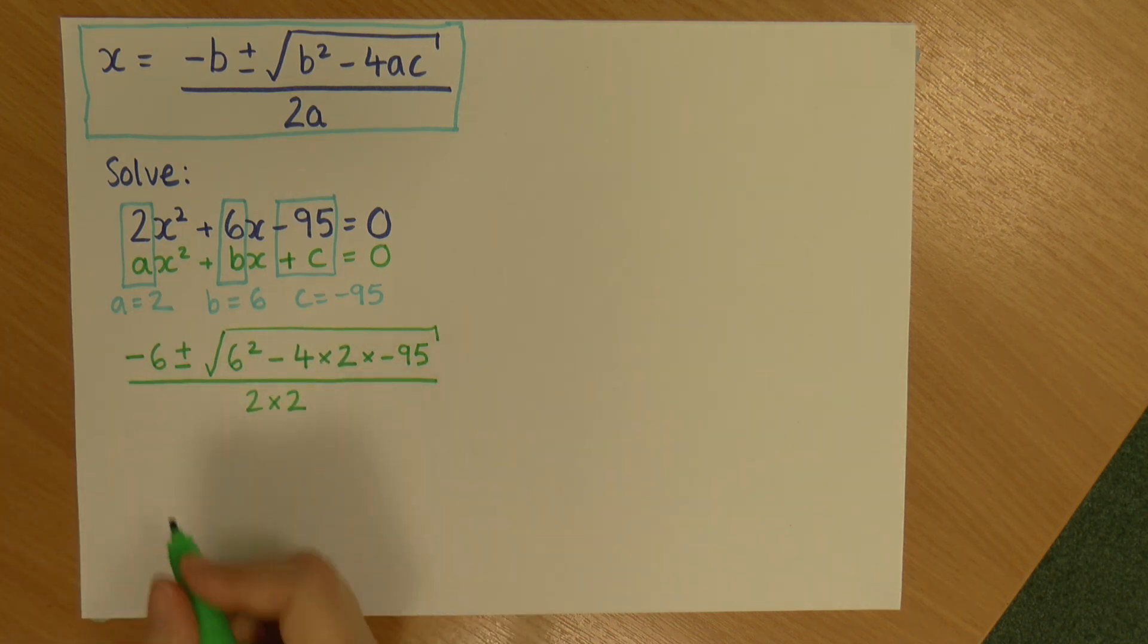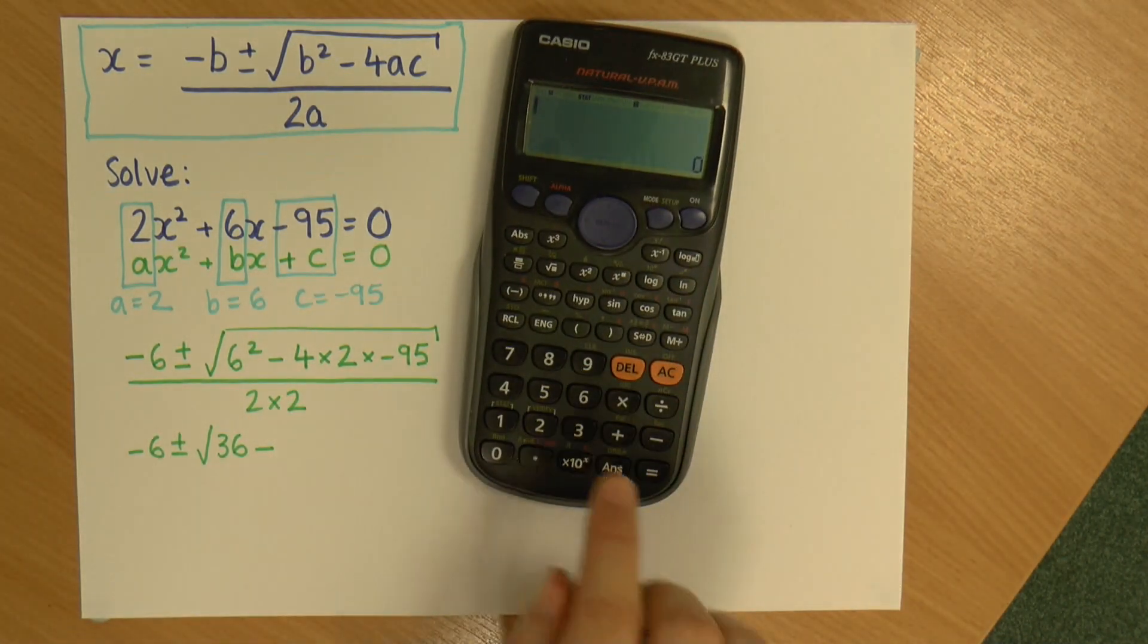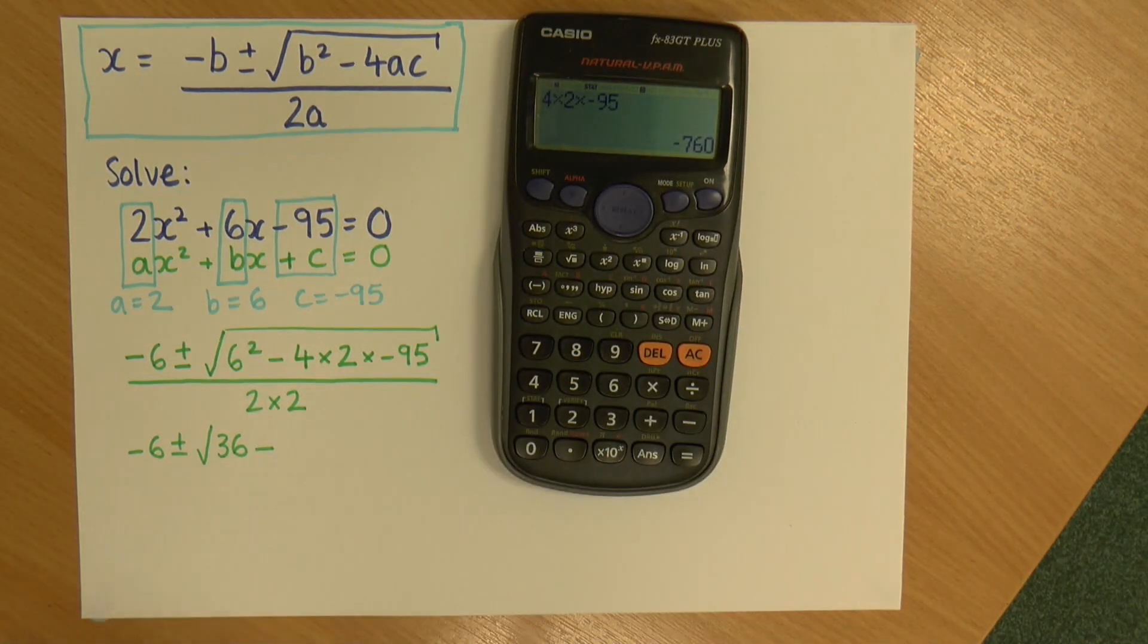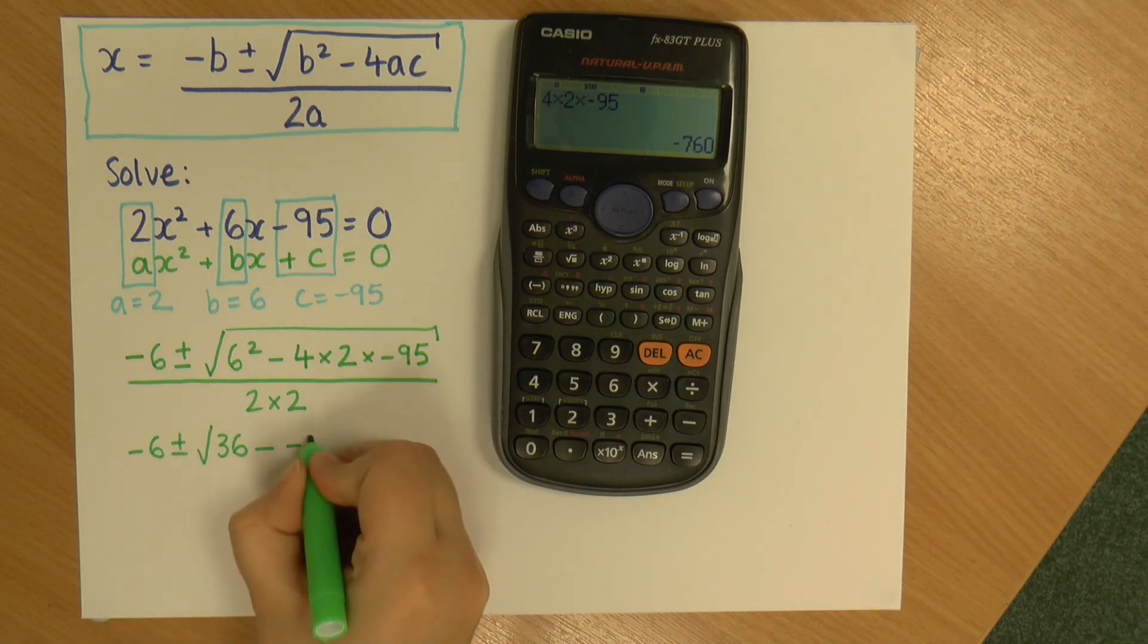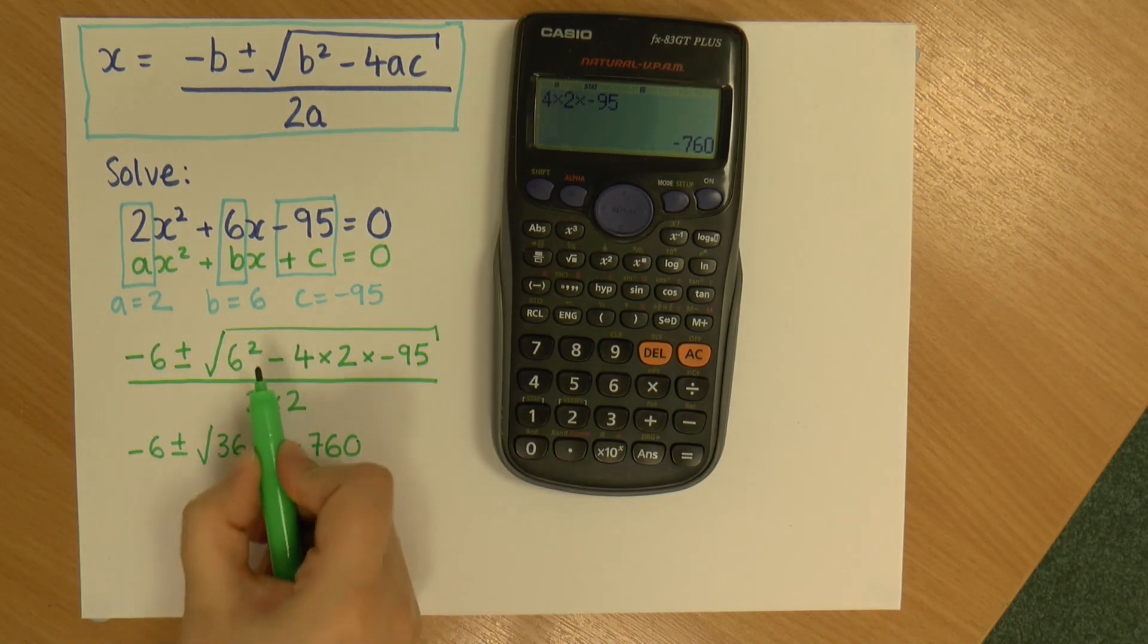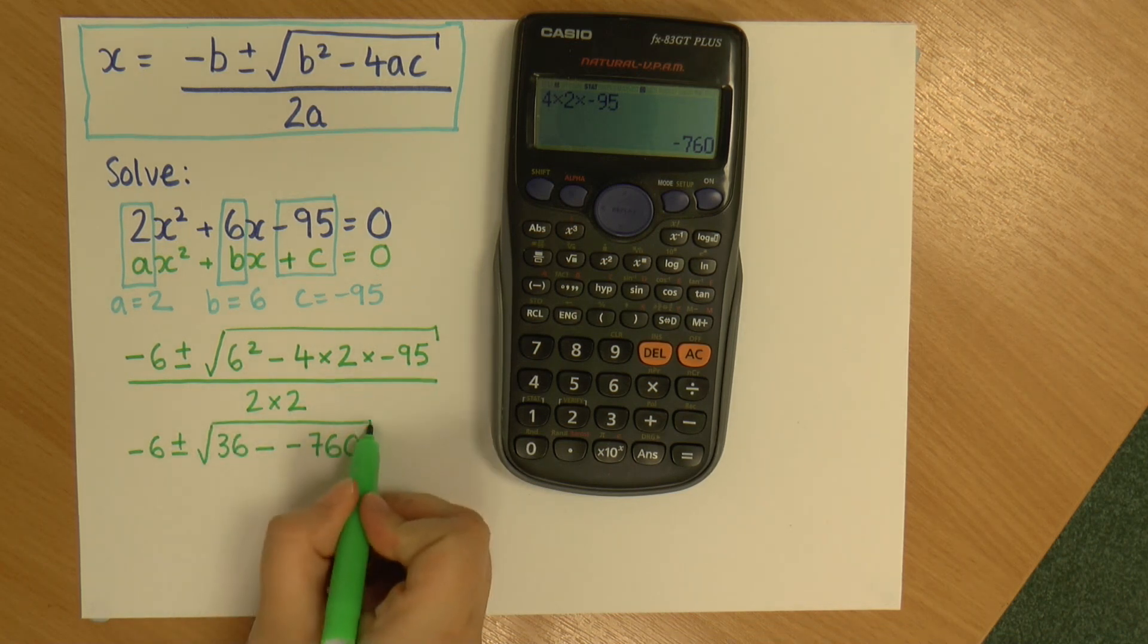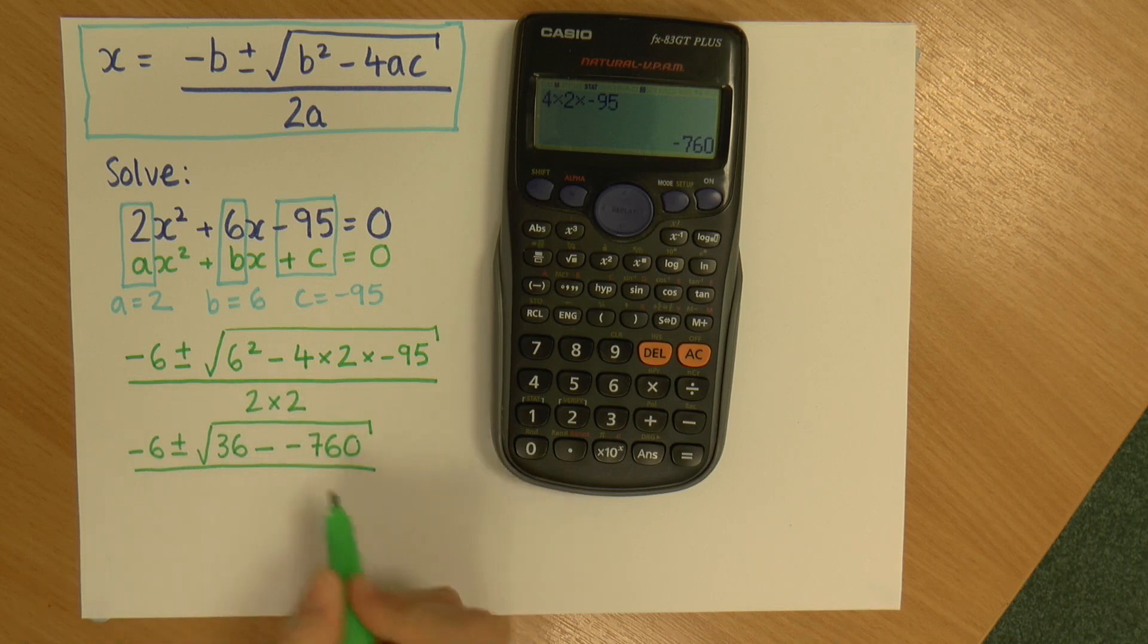Okay, so now let's tidy this up a bit. So I've got my minus 6 plus or minus the square root of 6 squared, which is 36, minus, and I'm not going to try and do this in my head, so I'm going to grab my calculator and go 4 times 2 times minus 95. And that gives me minus 760. So it is minus this calculation, which is minus 760. So you'll notice I've got two minuses next to each other there. And that is all over 2 times 2, which is 4.